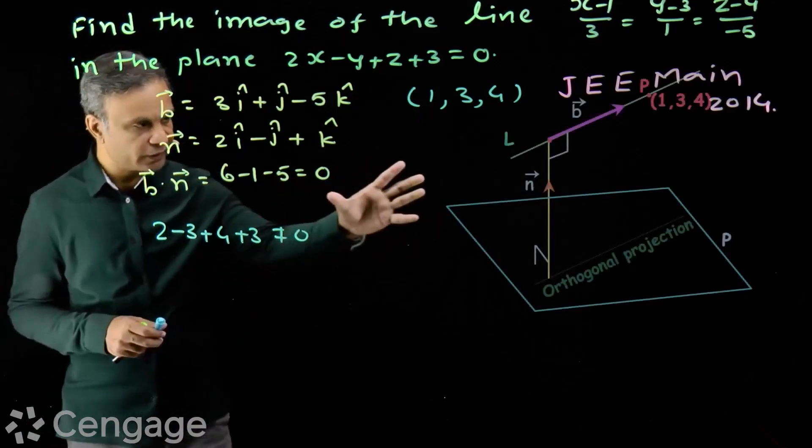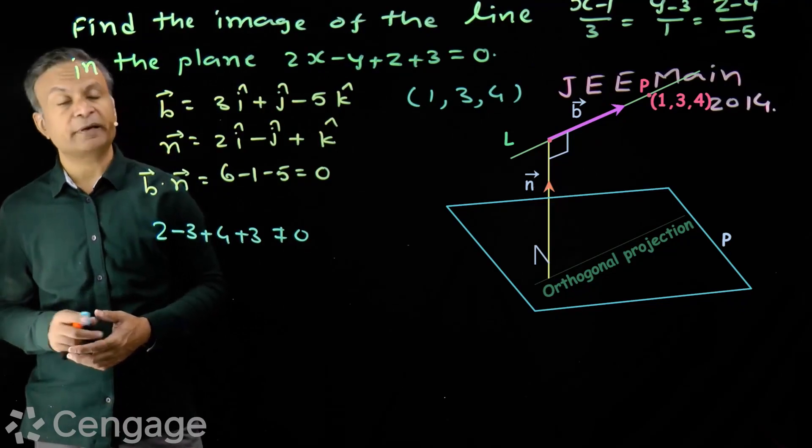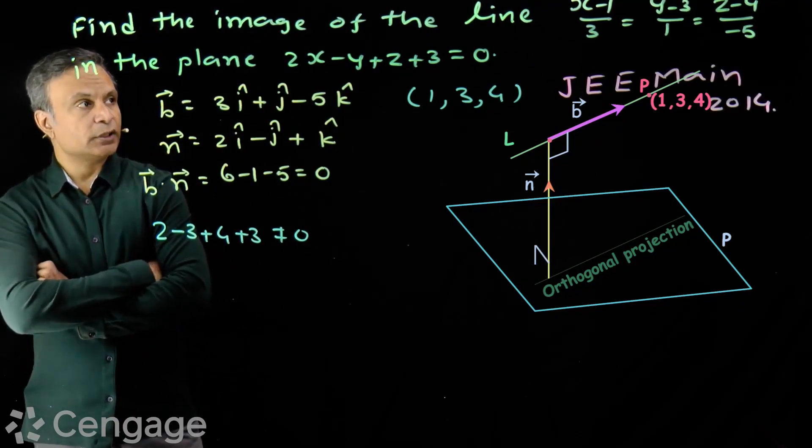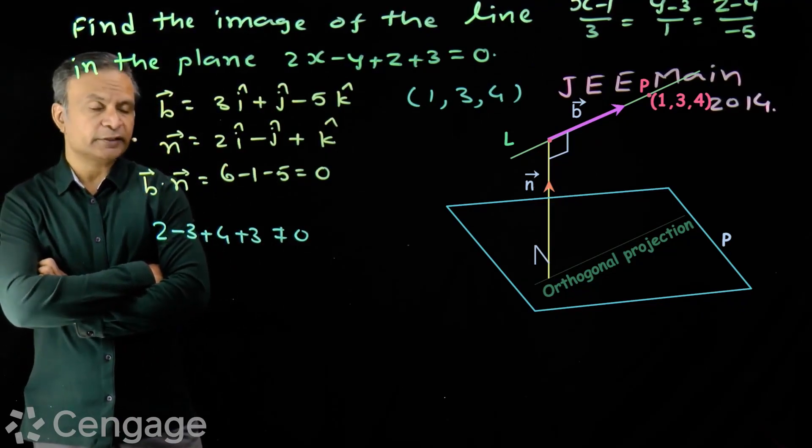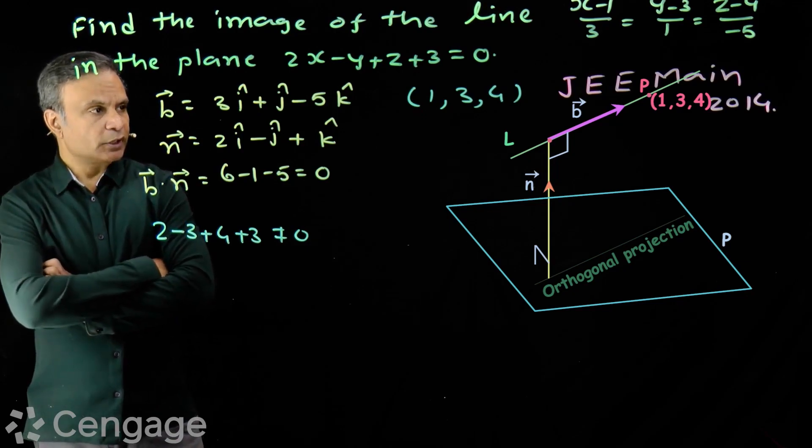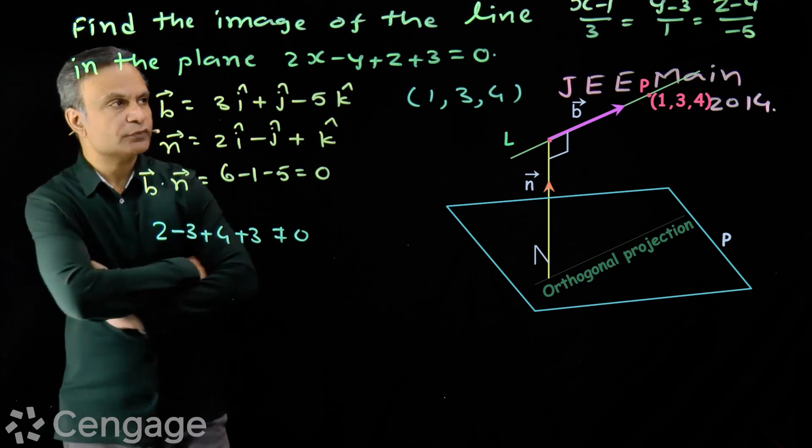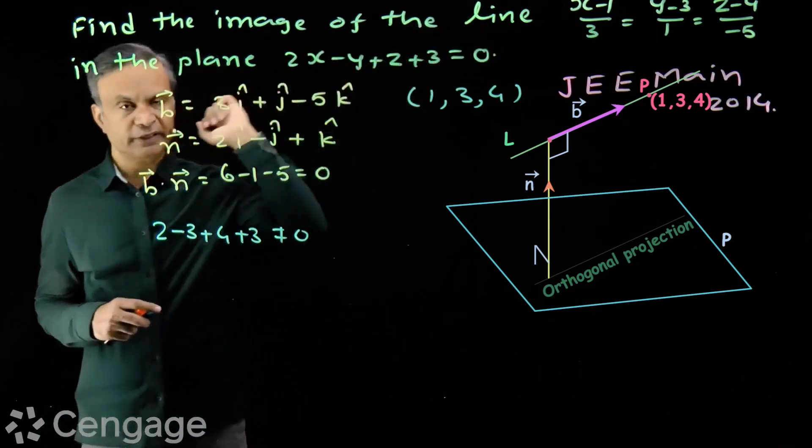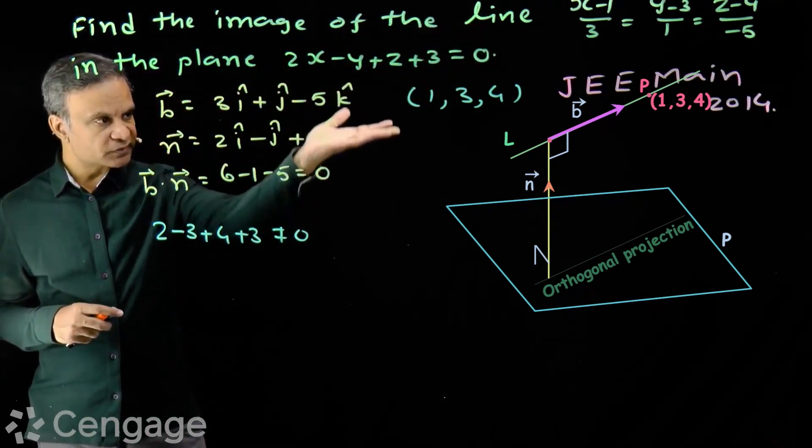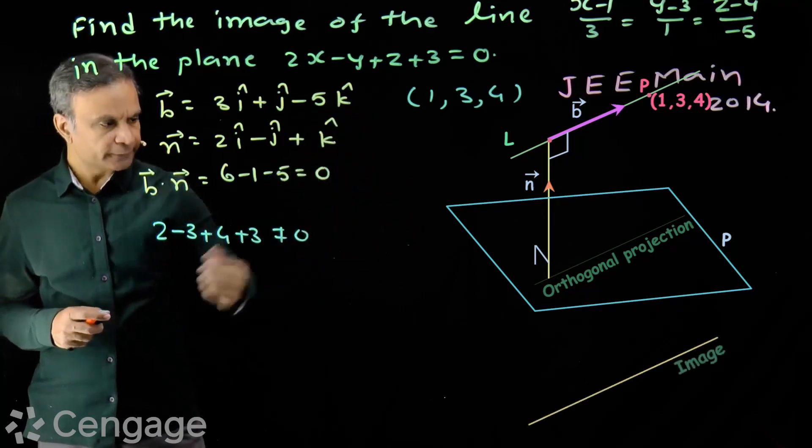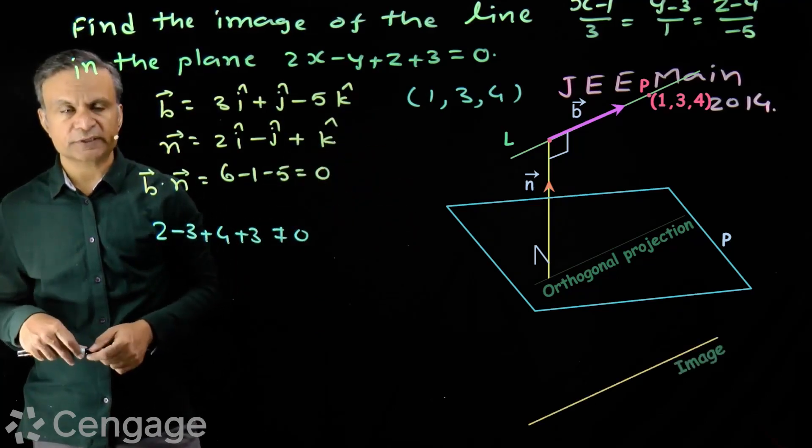So, here we have plane and line where line is parallel to the plane. Pahle yeh hum positions check karenge land and plane ke. Now, we have to find equation of image of this line in this plane. Is plane me is line ka image nikal na hai? Image will be here. Yaha pe hooga image. Kise nikalayenge?